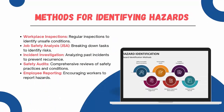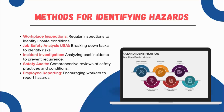There are several techniques for identifying hazards. The first is workplace inspection — regular inspections help to identify unsafe conditions. The second is Job Safety Analysis or JSA, which involves breaking down tasks to identify risks. The third is Incident Investigation — analyzing past incidents to prevent reoccurrence. The fourth is Safety Audits, a comprehensive review of safety practices and conditions. The last is Employee Reporting — encouraging workers to report hazards. Each of these methods provides valuable insight into potential hazards in the workplace.